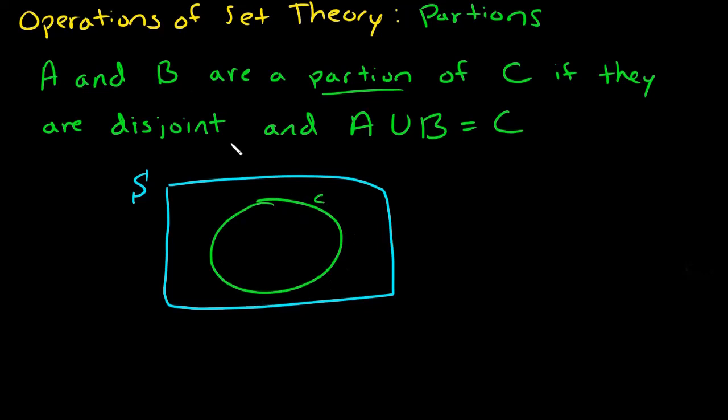Then event A might be this part of C, so half of C, this is event A, and then event B would be the other half of C. So this is event B.